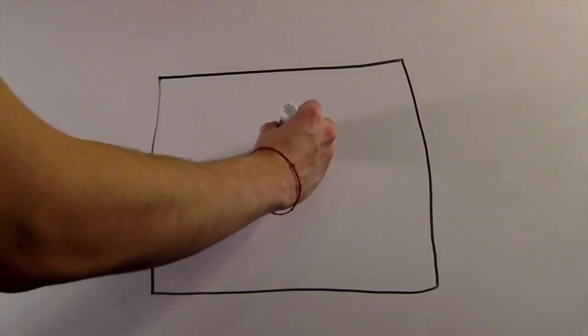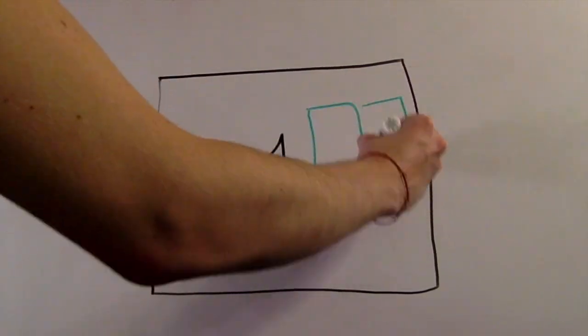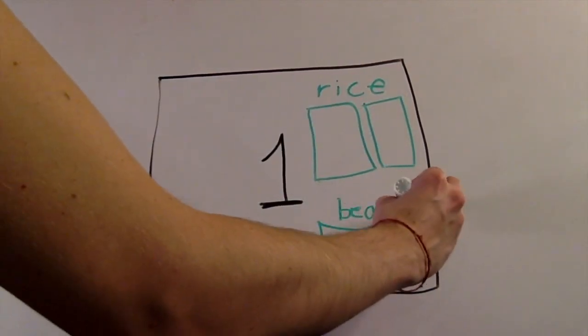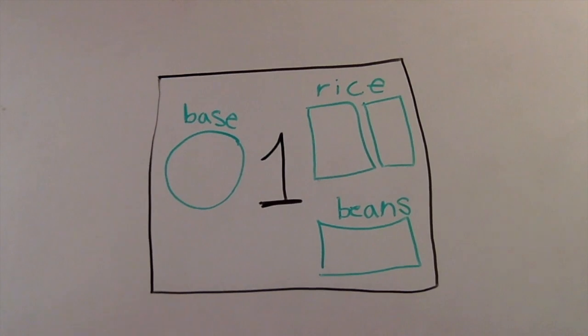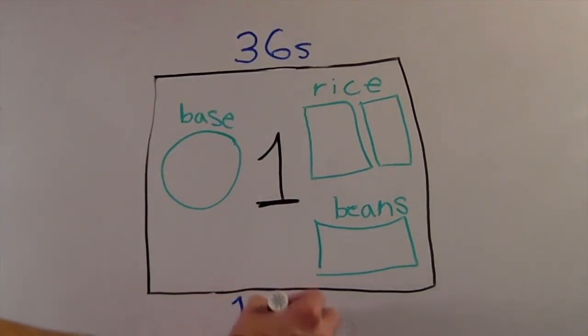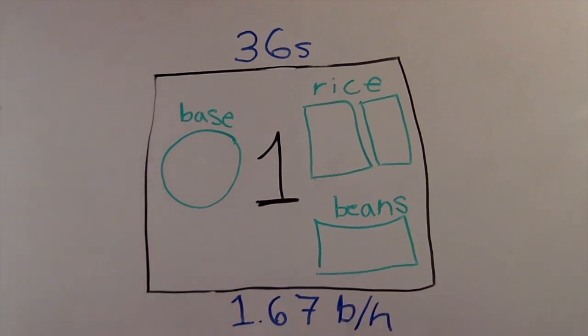Station 1. The customer places their order and picks their base of white or brown rice and beans. The order takes approximately 18 seconds, 9 seconds for rice, and another 9 seconds for beans, or 36 seconds total. Station 1 has a capacity of 1.67 burritos per minute.